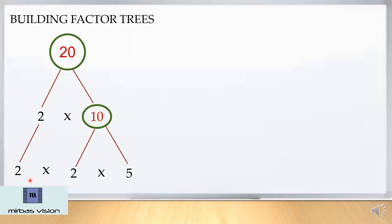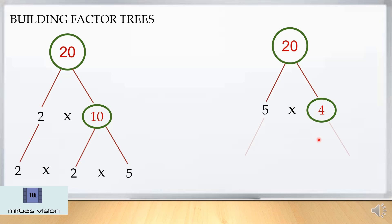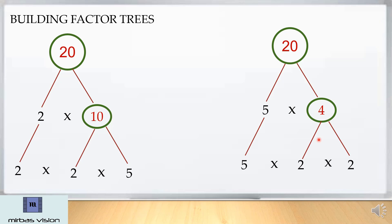With 20, we can also break it up another way. 20 can also be further broken up as 5 fours. Here, 5 cannot be further broken up, and 4 can be broken up as 2 into 2. Can 5 be further broken up? No. Can 2? No. That 2 also? No. So we can stop here. When we check the last row in both factor trees, you find the same numbers: 2, 2, 5 and 5, 2, 2.